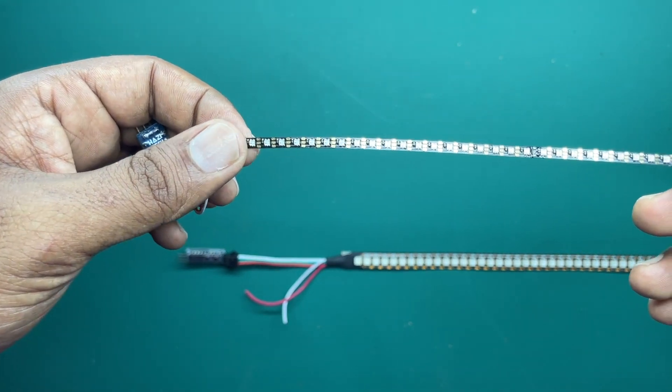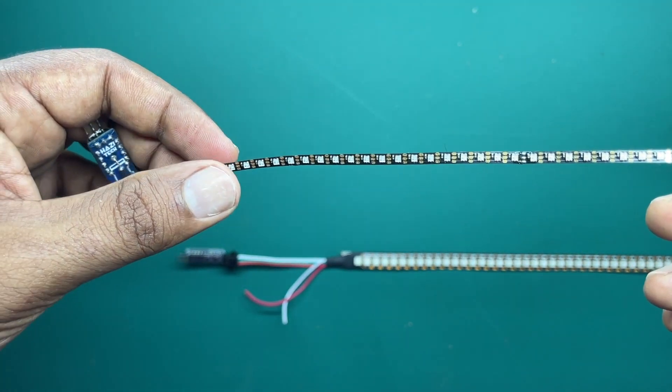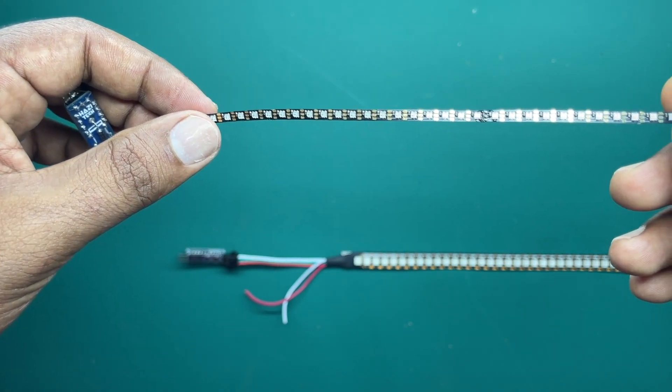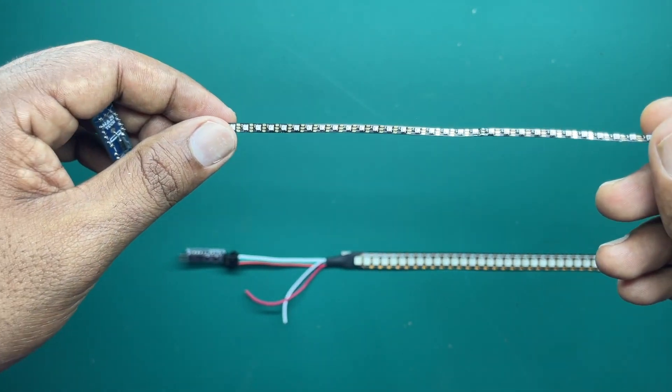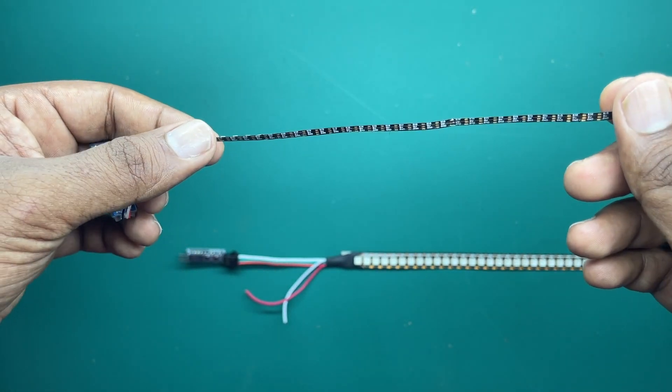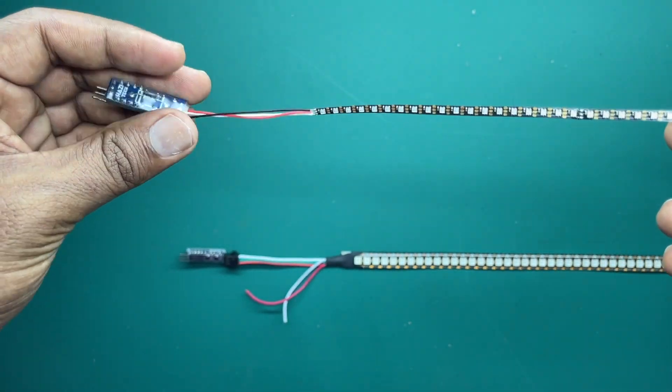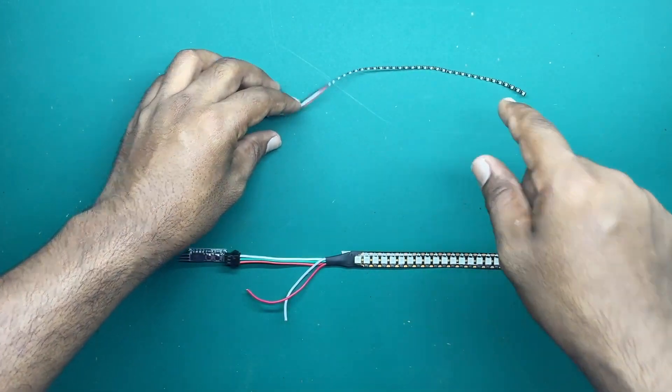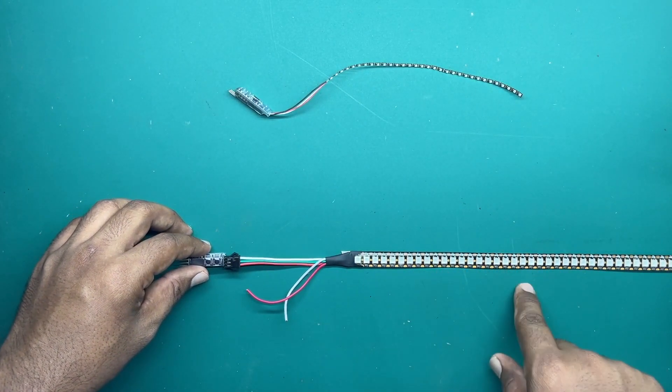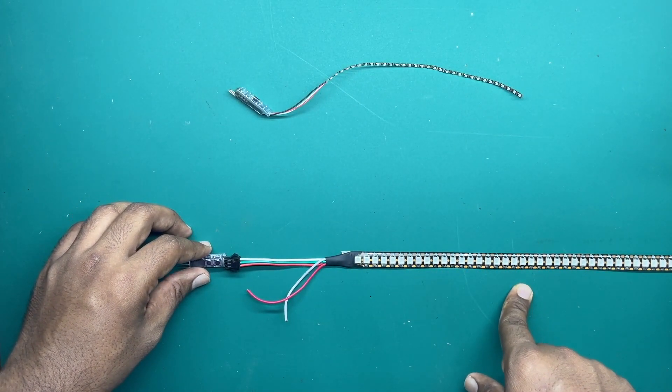In the cabin of the RC truck or car. I mean, there are multiple applications. But as usual, instead of using this LED strip, you can use a full size LED strip as well, WS-2812B.